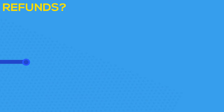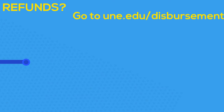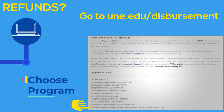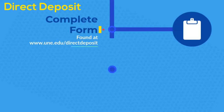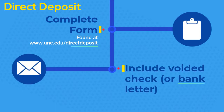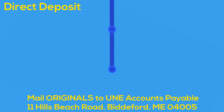We know you're concerned about your refund. Please use our disbursement schedule found at this link to find the date your loan funds will pay. However, this is not the date of your refund — please allow seven to ten days after the published disbursement date for your refund to reach you. If you're interested in having your refunds deposited directly into your bank account, please complete the direct deposit form. Mail this form along with an original copy of a voided check or bank authorization letter by snail mail to UNE's accounts payables office.